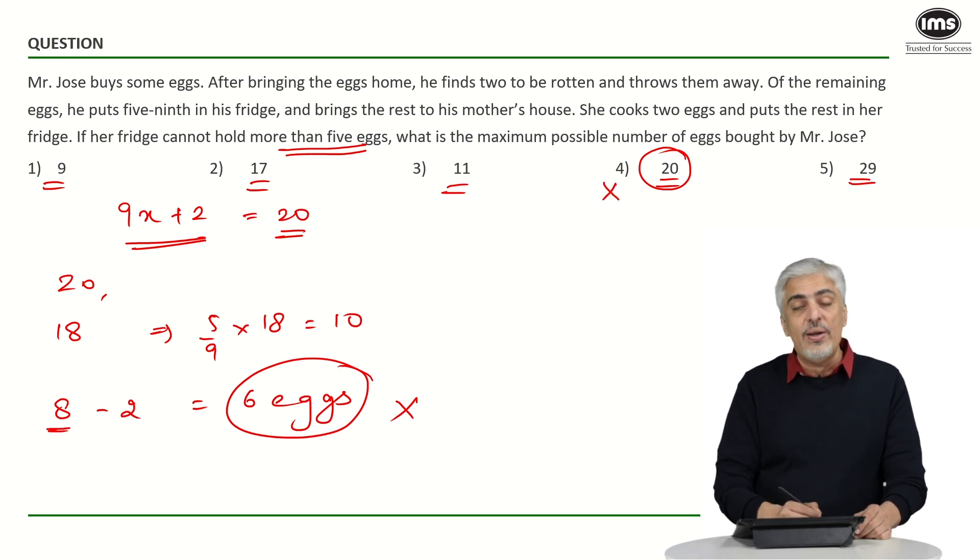Now think logically if 20 is not the answer, 29 also cannot be the answer because with 29 more eggs will be left over. Simple answer has to be 11. On the worst side, you want to be extra sure, you can just check with 11.